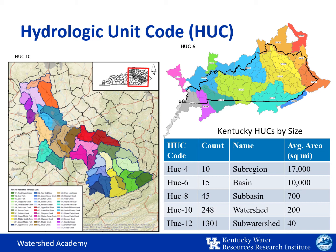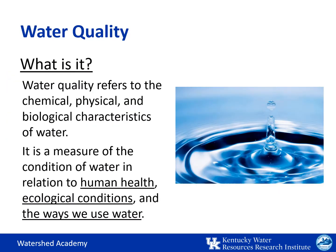When we use the word watershed, we're not typically using the technical definition of a HUC-10, but the area of land that drains to a common point or water body in general. As we discuss water quality, we'll be considering its chemical, physical, and biological characteristics. We'll be comparing these conditions to scientifically determined standards that protect human health, ecological conditions, and the other ways that we use water.